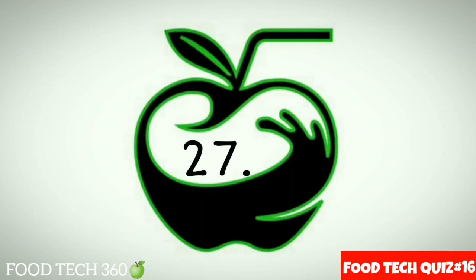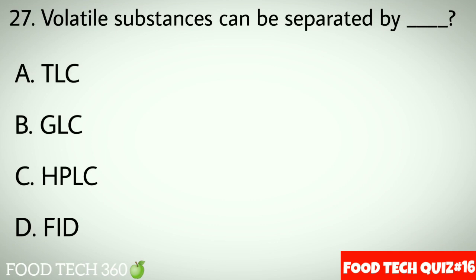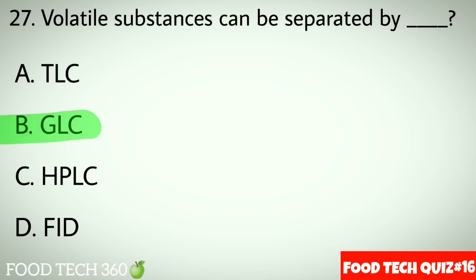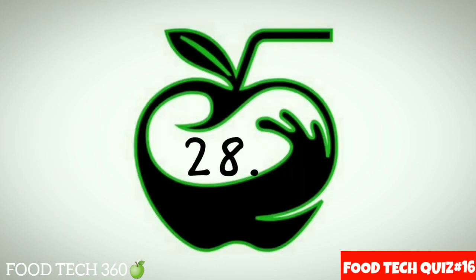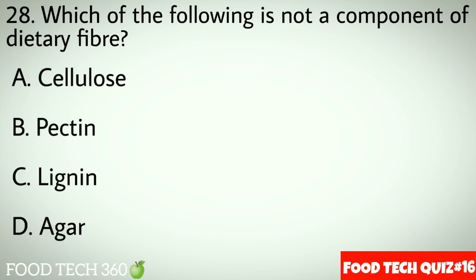Question No.27: Volatile substances can be separated by dash. Options A: TLC. B: GLC. C: HPLC. D: FID. Correct answer B: GLC.